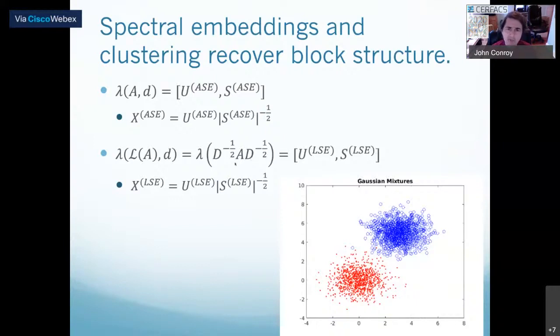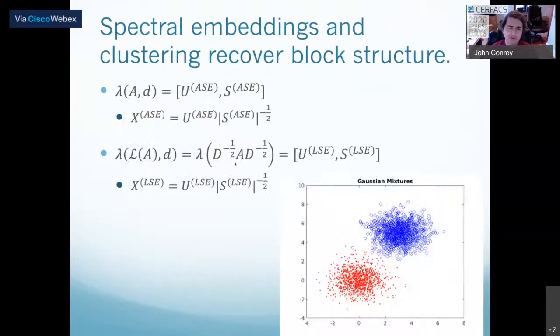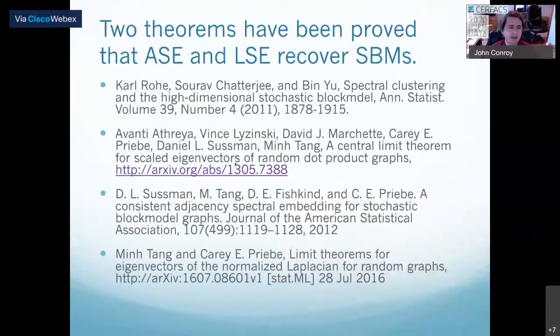The spectral embedding can recover these. There are two main theorems here which say that the adjacency spectral embedding and the normalized Laplacian are able to recover the parameters of the stochastic block model. In the parlance of statistics, they're called universally consistent. In the limit to get enough data, samples of the edges from the graph, you're able to get these parameters.